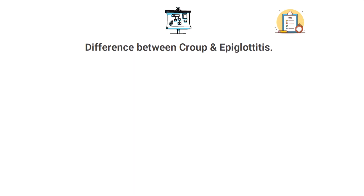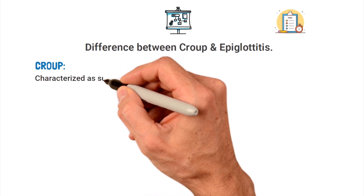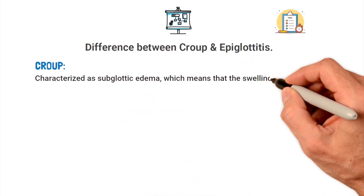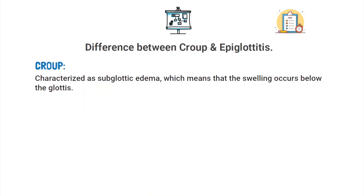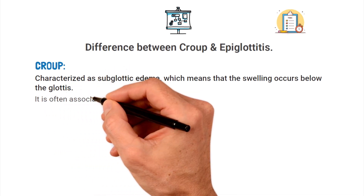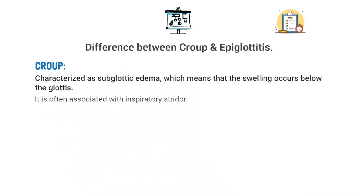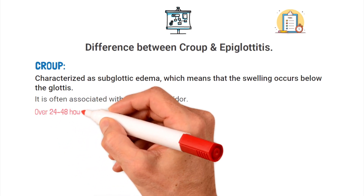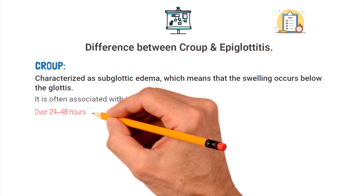For the TMC exam, you absolutely must be able to recognize the difference between croup and epiglottitis. Croup, also known as laryngotracheobronchitis, is characterized by subglottic edema, meaning the swelling occurs below the glottis. It is often associated with inspiratory stridor, and when croup is present, the onset occurs more slowly, usually over 24 to 48 hours.